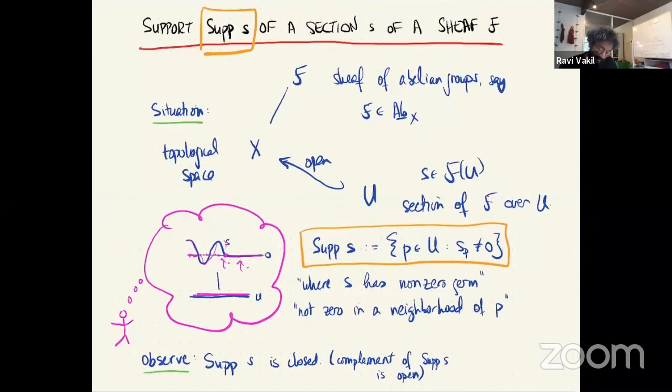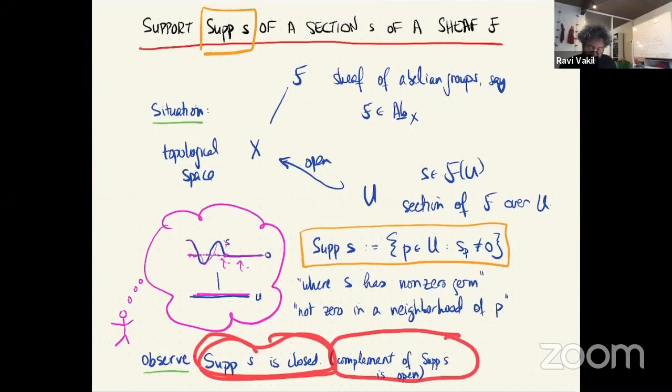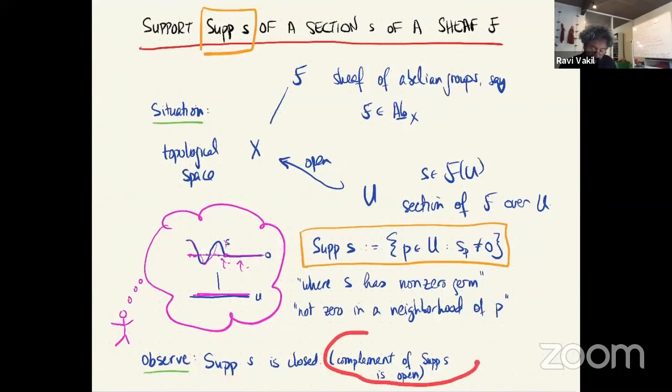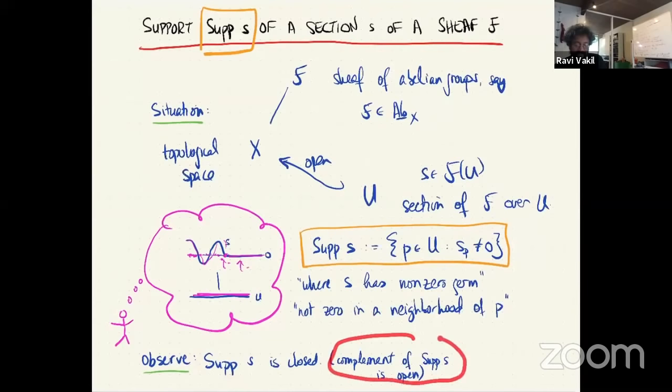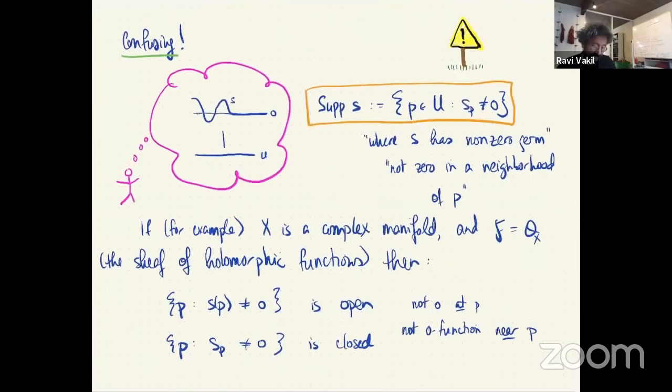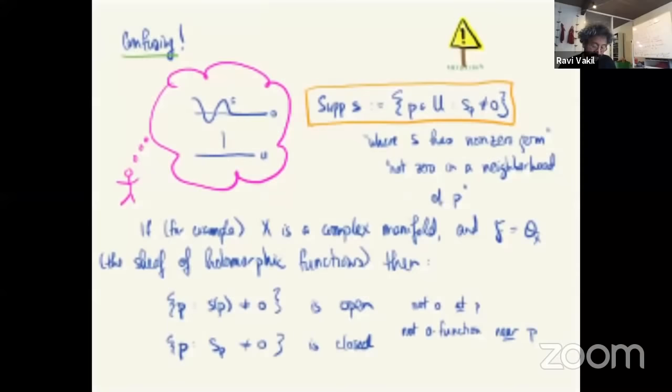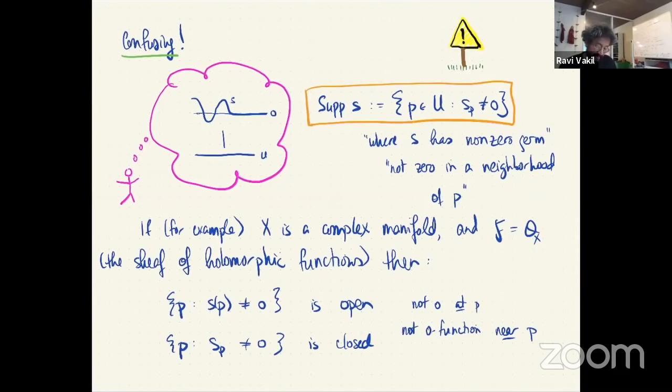In a picture: s is kind of zero here, goes up, then has non-zero germ at all those points including a boundary point, then has zero germ afterwards. This is a closed subset — equivalently, the complement is open — because the complement is where it does have zero germ. Zero germ means it's actually zero in a neighborhood, so it has zero germ everywhere in the neighborhood. Hence the support is closed.